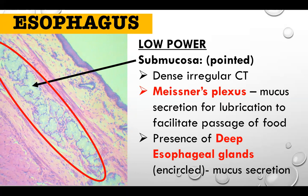There are only two organs that have glands in the submucosa: the esophagus and the duodenum. For the rest of the GI tract organs, glands are found in the lamina propria only. The deep esophageal glands secrete mucus to facilitate passage of food. If you see these glands, you are automatically at the submucosa, and the nerve plexus present here is Meissner's plexus.